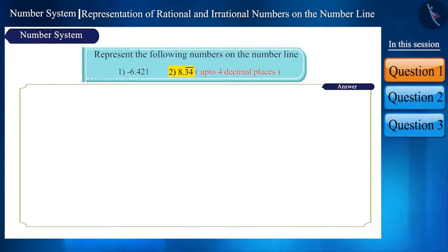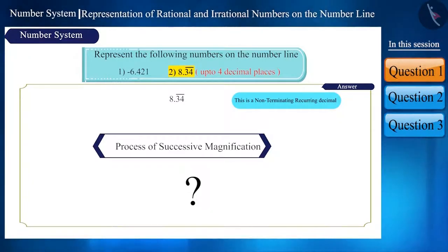Friends, the second number is 8.34 bar. And according to the question, we have to represent it up to 4 decimals on the number line. This is a non-terminating recurring decimal.